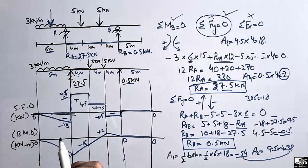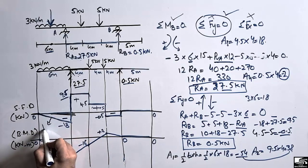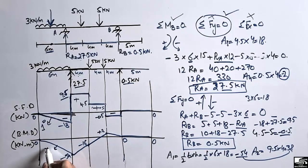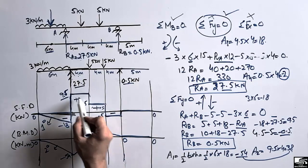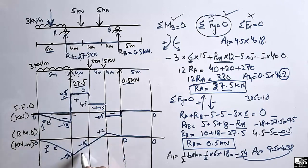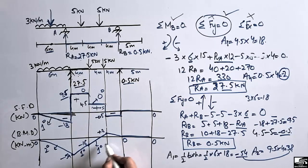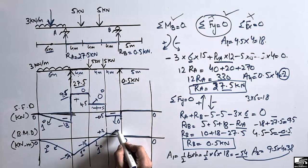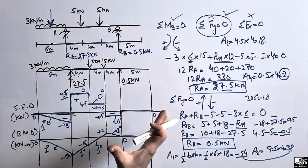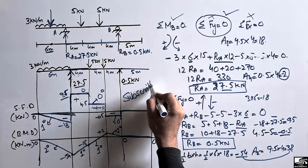Always keep in mind that the bending moment diagram should always be one degree greater than the shear force diagram. For example, if the shear force is a linear line of one degree, the bending moment will be a parabolic line of two degrees. If the shear force is a horizontal line of zero degree, the bending moment will be a linear line of one degree. Thank you for watching, and don't forget to subscribe to our channel.